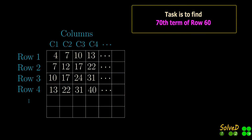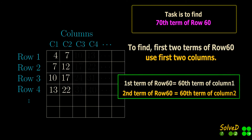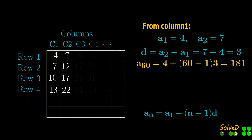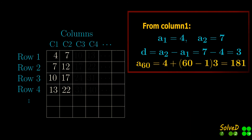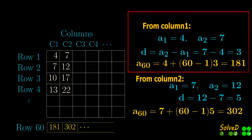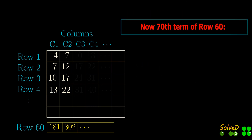In order to find the first two terms of row 60, we can use the first two columns. From column 1. From column 2. Now consider row 60.